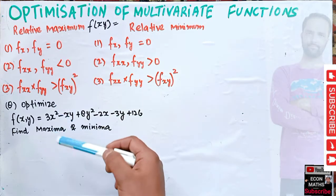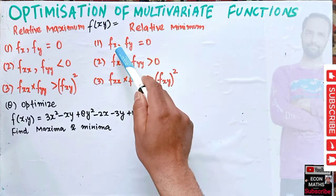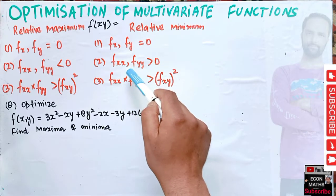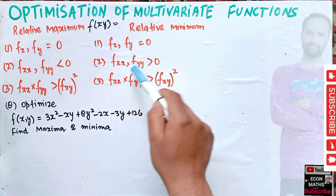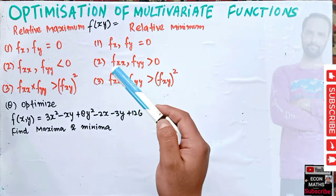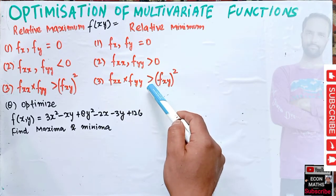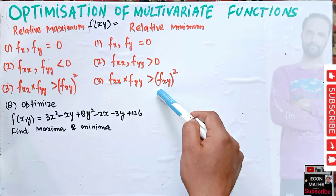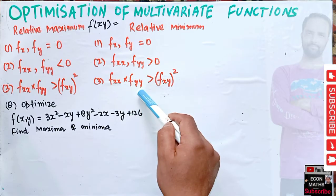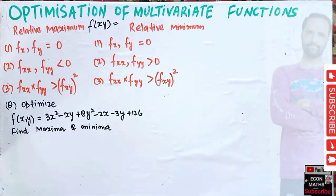For relative minimum, we first set the first derivatives of x and y equal to zero. Then we take the second-order direct partial derivatives — they should be greater than zero in case of relative minimum, and the product of the second-order direct partials should be greater than the square of the cross partial. Here fxx and fyy are the direct partials, and fxy and fyx are the cross partials.